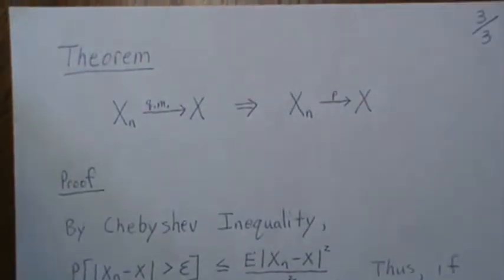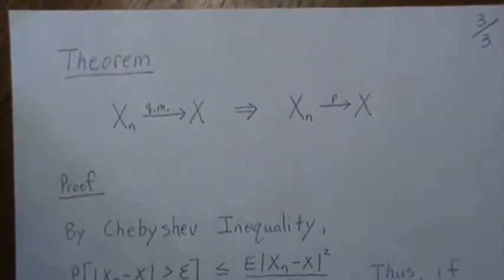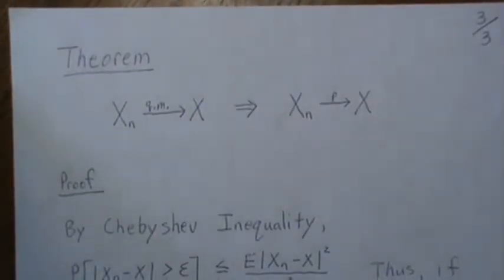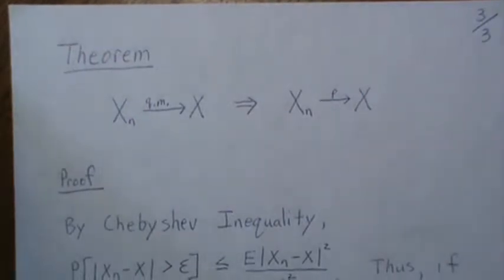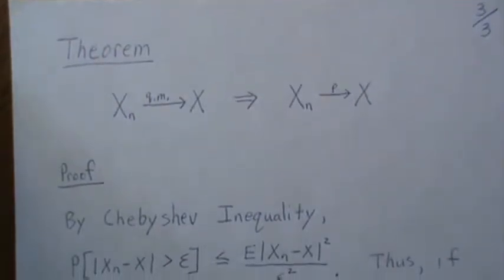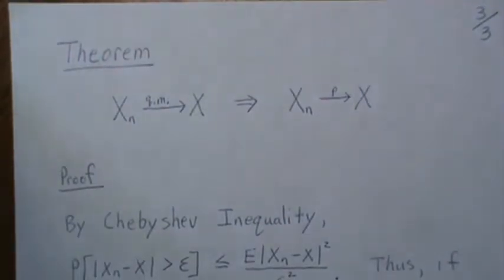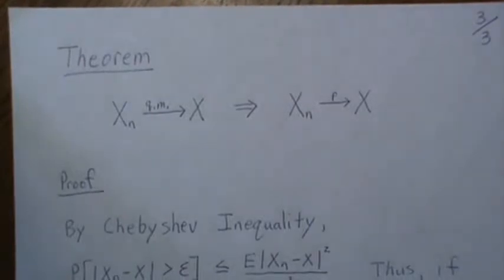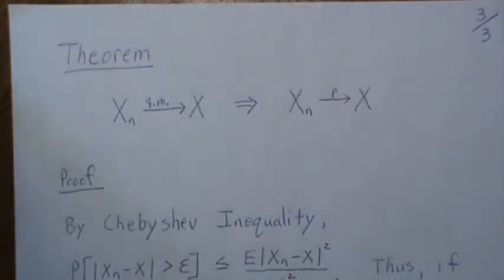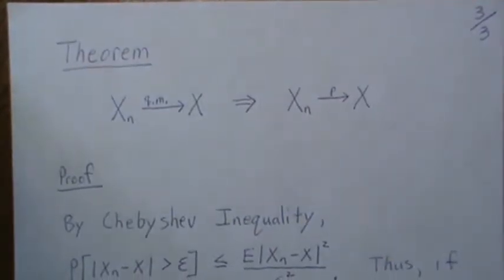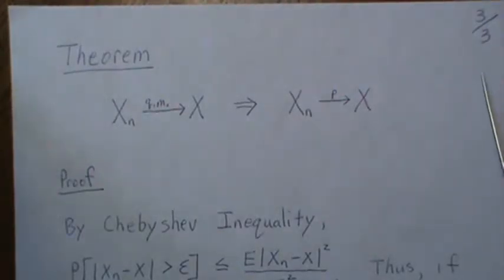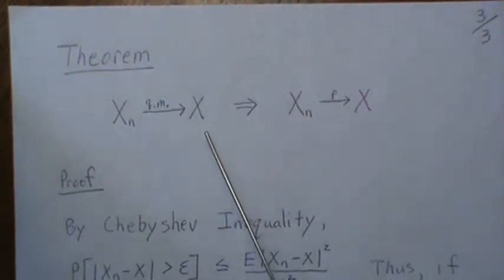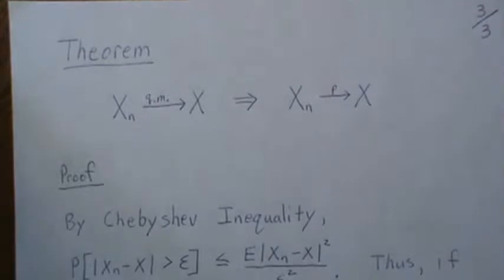Hello. In this video we're going to prove that convergence in quadratic mean implies convergence in probability. We're also going to prove that convergence almost surely implies convergence in probability. We're going to do something a little different - we're going to start with the second one first and then prove the first one.